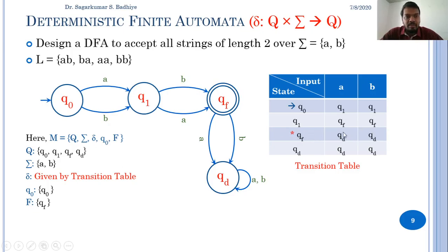In qf if I get a I will go to qd, and if I get b I will go to qd. Then in qd whatever be the input I will stay in qd. Here qf is the final state which is marked by star in the transition table. This was an example of deterministic finite automata.